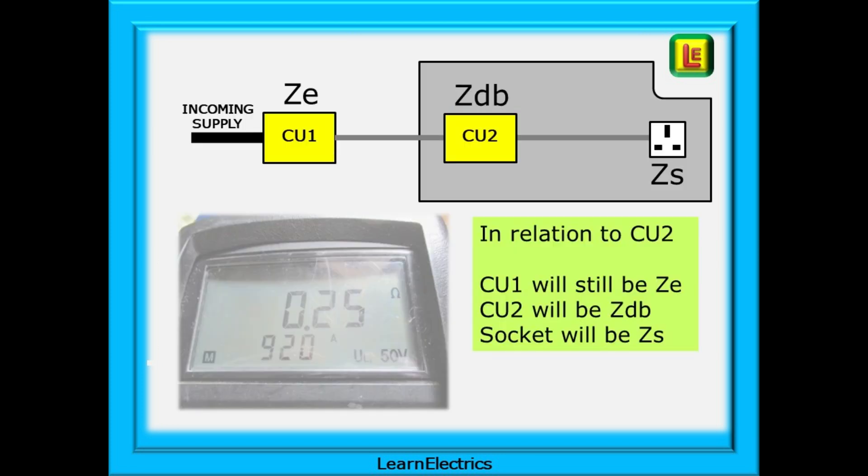Looking at a simplified view of CU2 now, and CU3 will be the same, CU1 is still ZE, the only ZE, and this will be the intake or supply ZE on CU2 paperwork. We put ZDB on the CU2 schedule of test results, and ZS for the socket that is on CU2. This ZS is ZDB plus R1 plus R2.